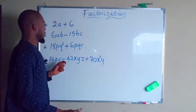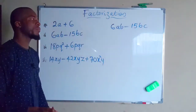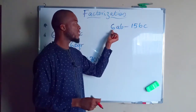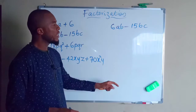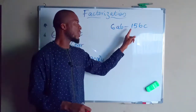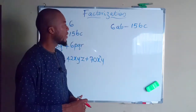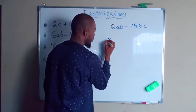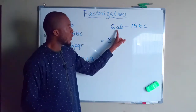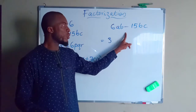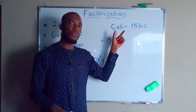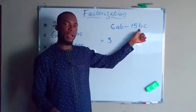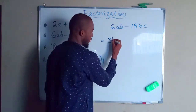Now let us look at the second expression. Remember, we group numbers together and letters together. The biggest number that can go into 6 and 15 without remainder is 3. Now for the letters: we have 'a' in the first term but not in the second term, so we do not factor out 'a'. However, both terms have 'b', so we factor out b. Our common factor so far is 3b.